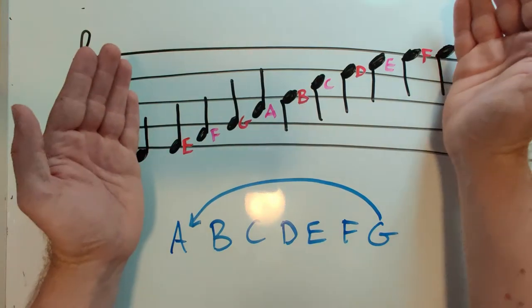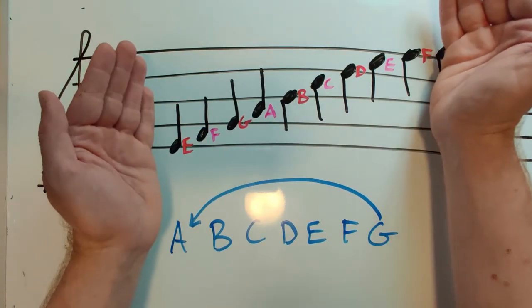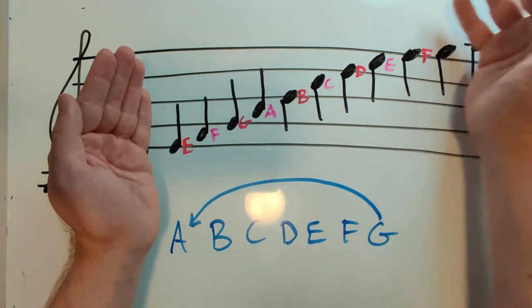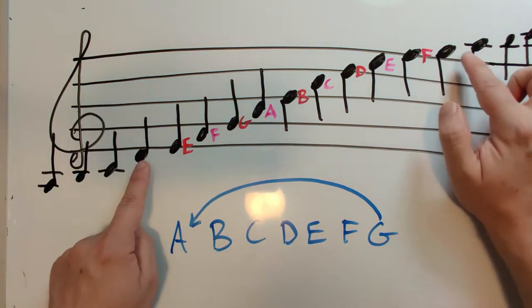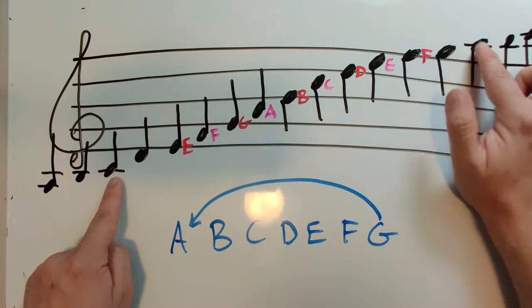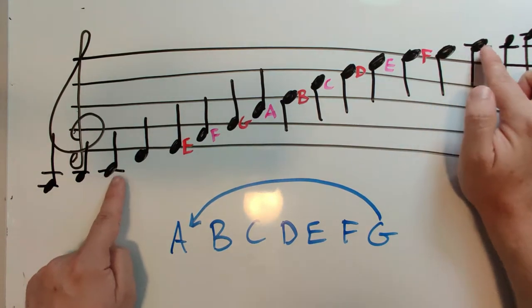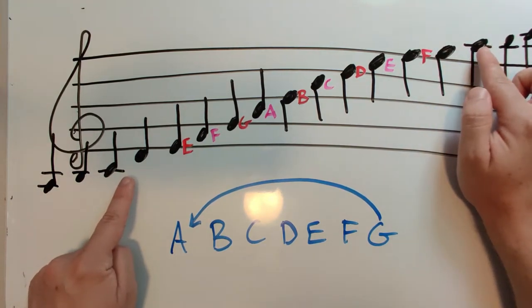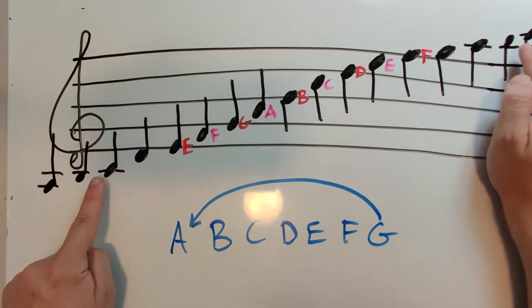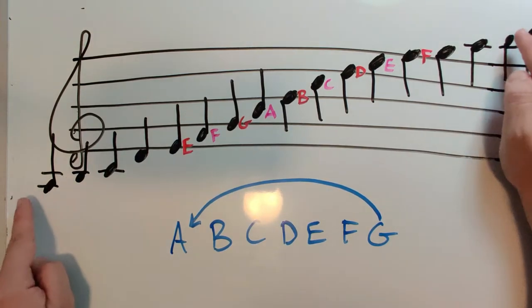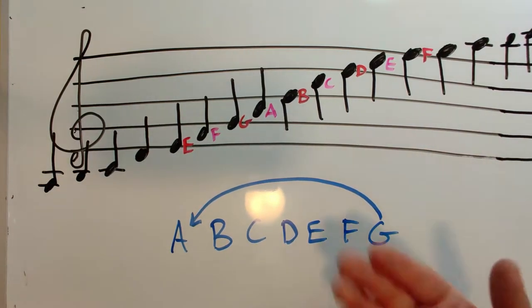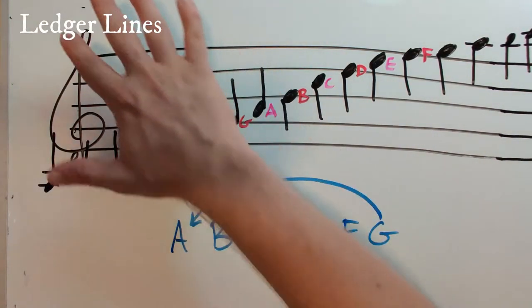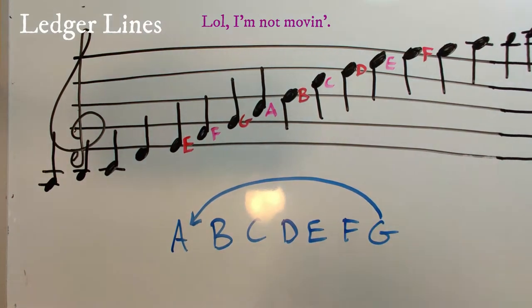But if you notice, music isn't just confined to these notes here. It can also explore above the staff and below the staff. And after these two, if you go down one or up one here, you'll notice that we have this slash, this line here. And if you go up again, we have that same slash. And if you go up or down again, now you have two slashes or two lines. These extra lines are called ledger lines.